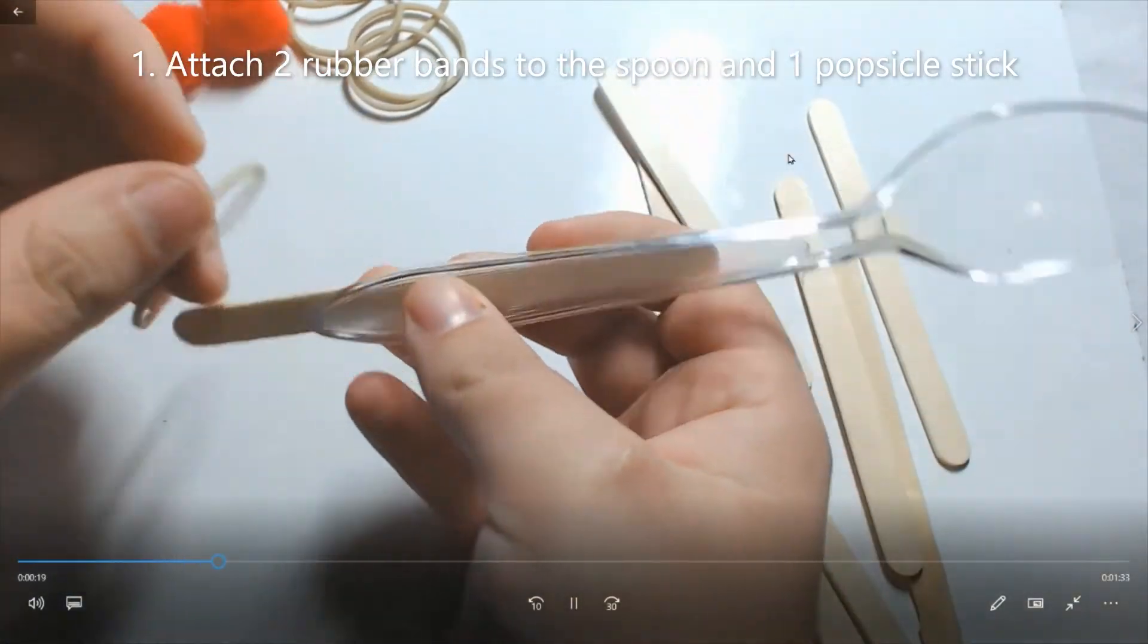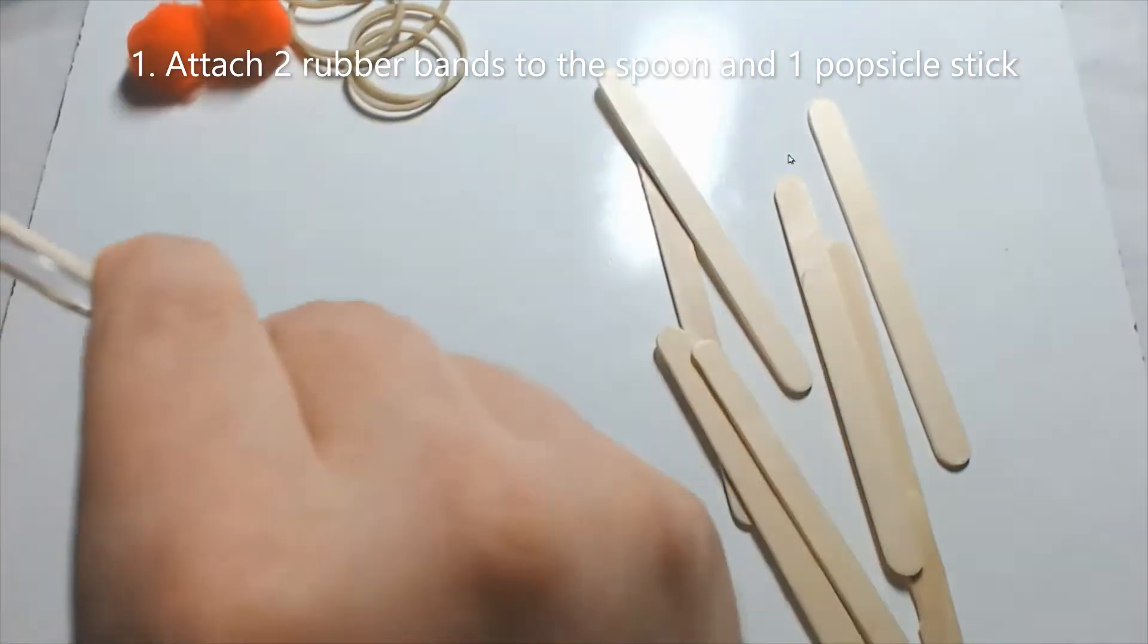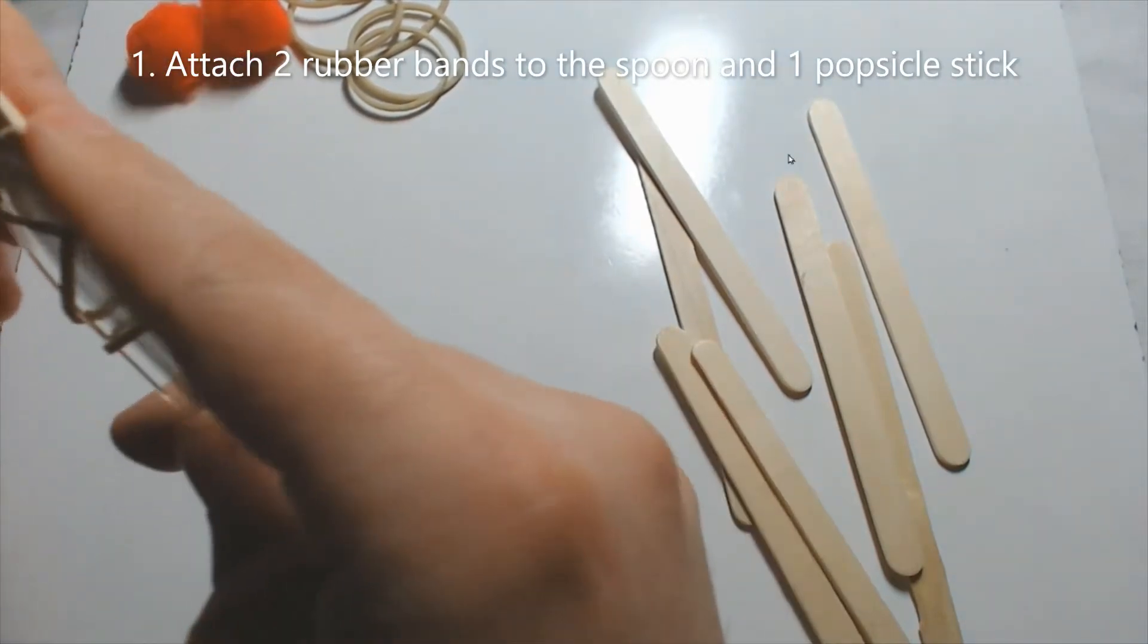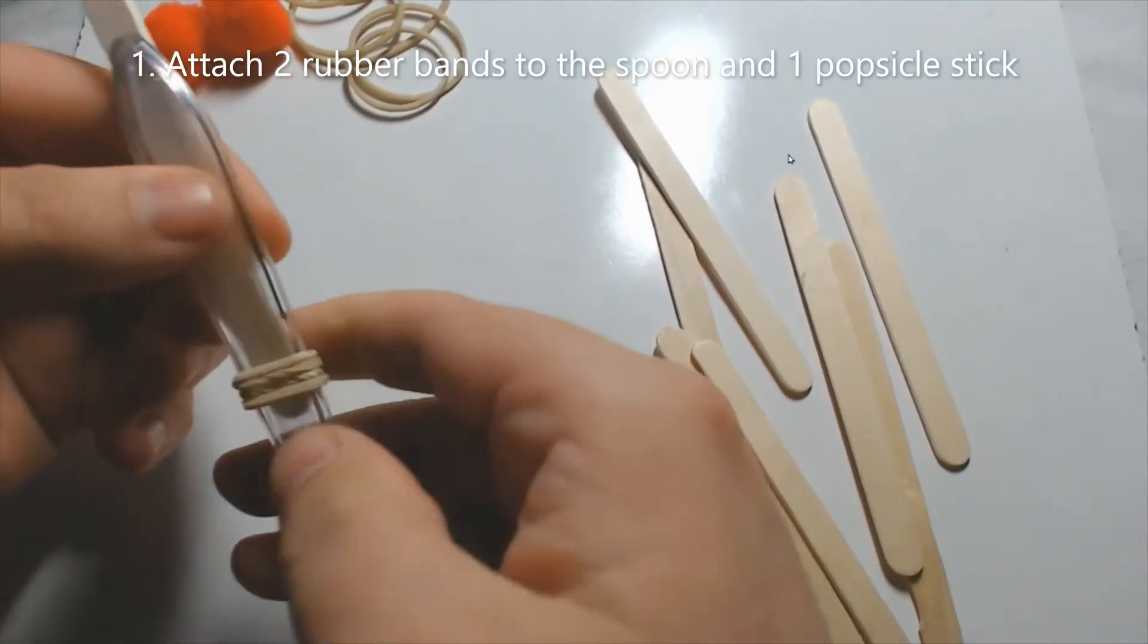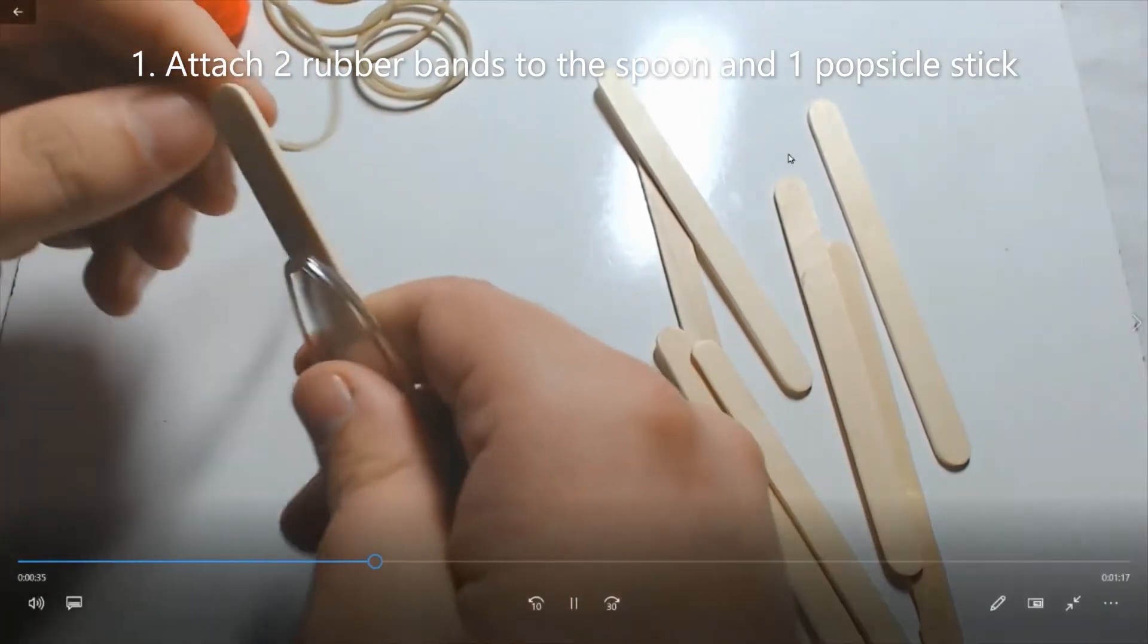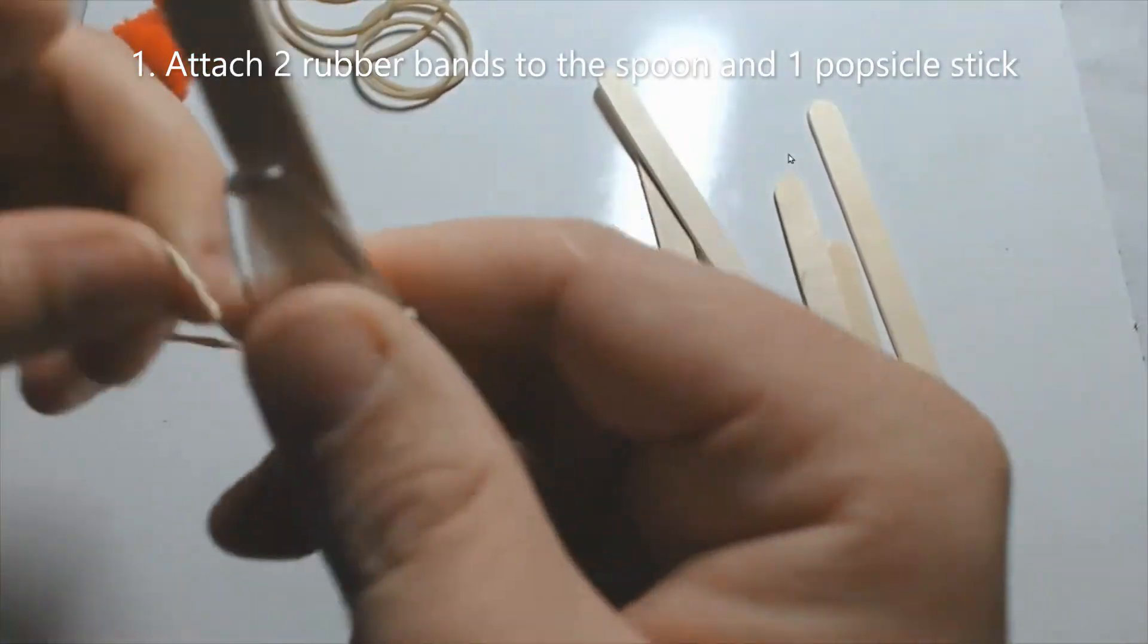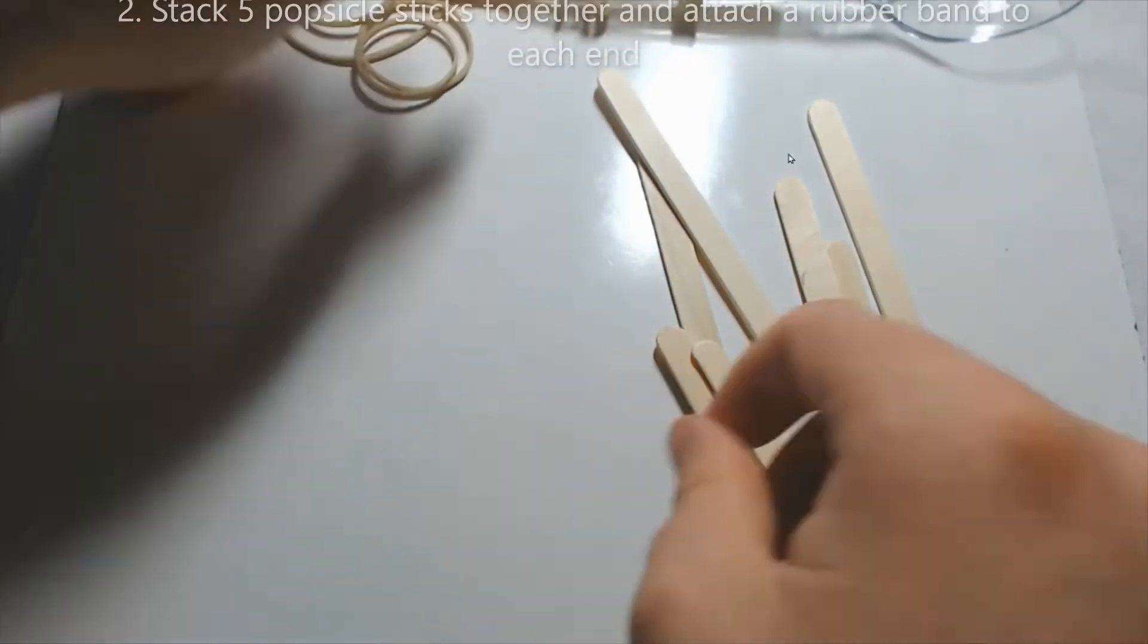The first step, you're going to take one popsicle stick and your spoon. You attach the popsicle stick to the back of the spoon with two rubber bands. Just keep wrapping the rubber band around both things until it comes tight, and then you can push it all the way down to the bottom. The next step is you're going to add a second rubber band. Make sure it's secured on there pretty tight and keep wrapping it around.